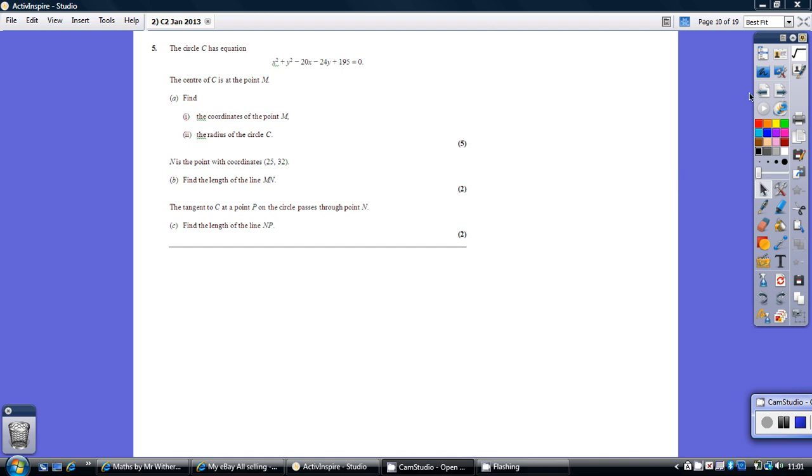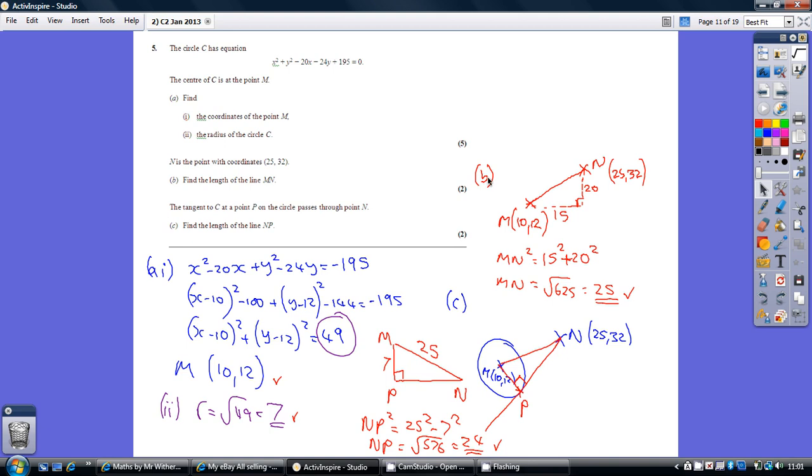Here's question 5, have a go. We need to start off by finding the coordinates of the point M, which is the centre of the circle.